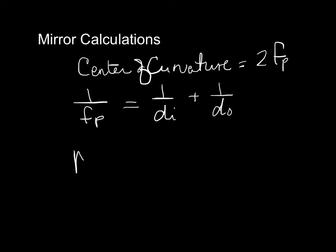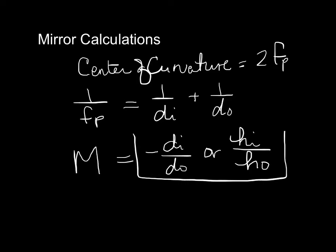And then to get our magnification, that's negative di over do, or it's hi over ho. And sometimes what we'll do is we'll set this part of the equation equal to each other. So you might be finding the magnification, or you might be using the equivalences in the magnification equation to find the height of the image or the height of the object.